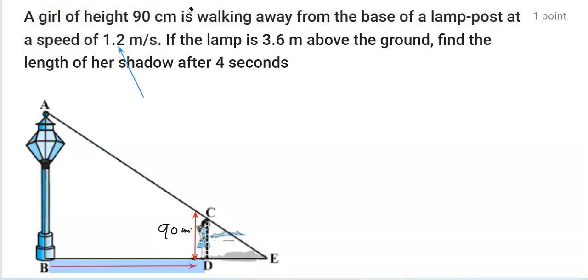Further, it is given that the lamppost is 3.6 meter above the ground, that means the height of the lamppost AB is 3.6 meters, or 360 centimeter, because I have taken the other measurements in centimeter.